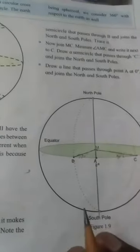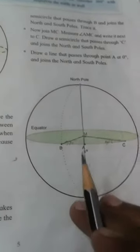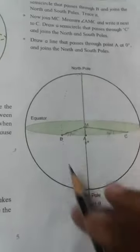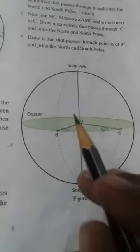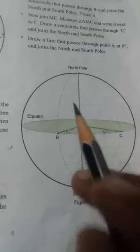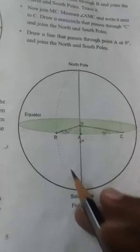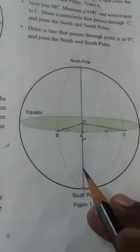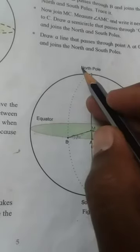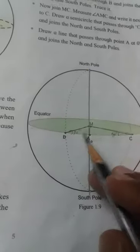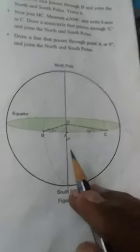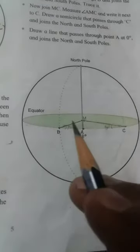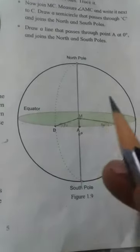Hello students. Previously we have learned how to draw vertical lines from north pole to south pole and we have realized that these lines form a semicircle. These semicircles are known as meridians of longitude. Today we will see about meridians of longitude.